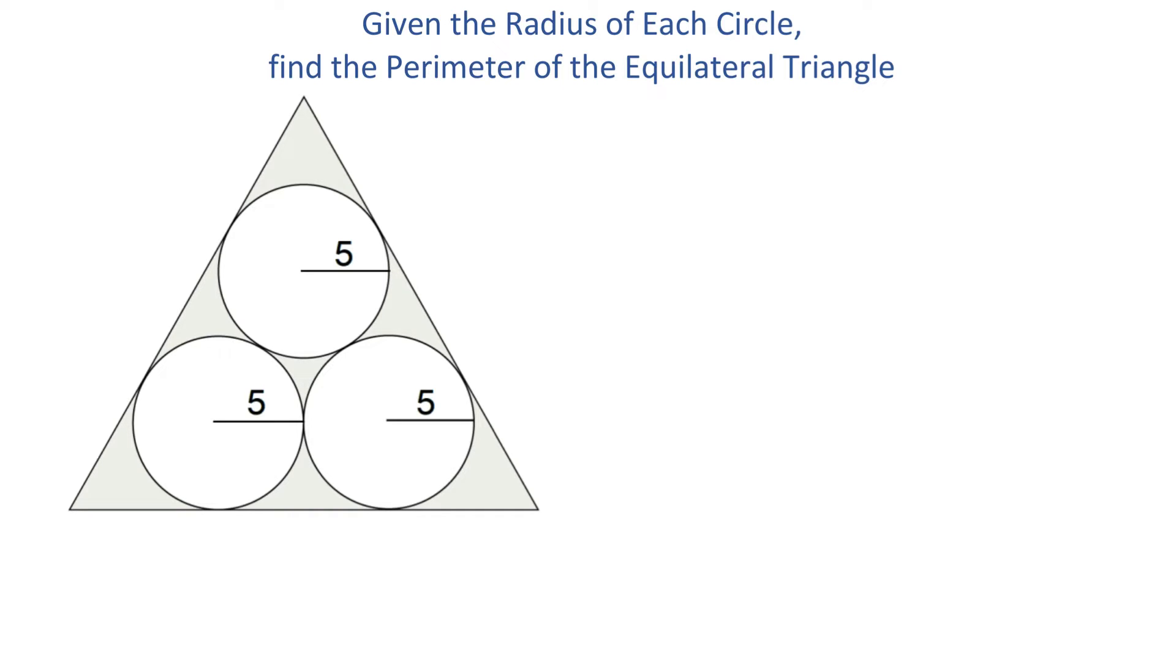We know that the perimeter is the sum of all three sides in this triangle, and because this is an equilateral triangle, all three sides are equal. If we can find one side, we can multiply it by 3 to find the perimeter. To find one side...